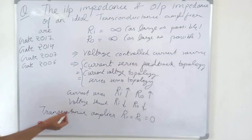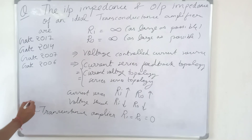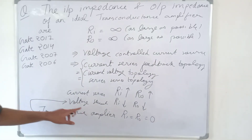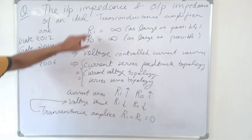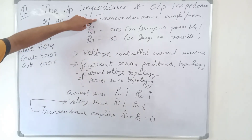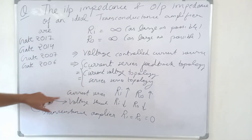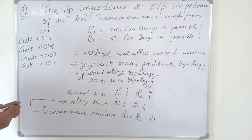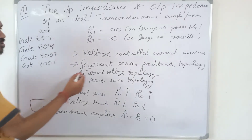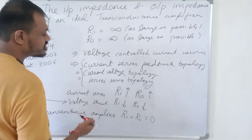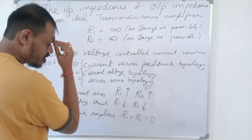The Transresistance Amplifier uses Voltage Shunt topology, while the Transconductance Amplifier uses Current Series topology. Current Series topology is also called Current-Voltage topology or Series-Series topology.